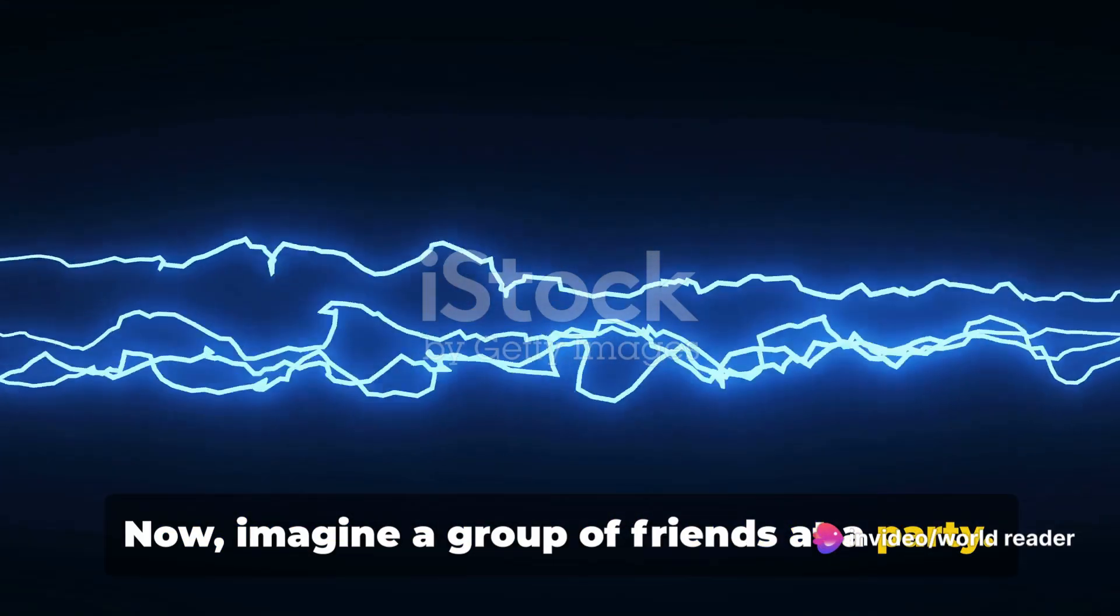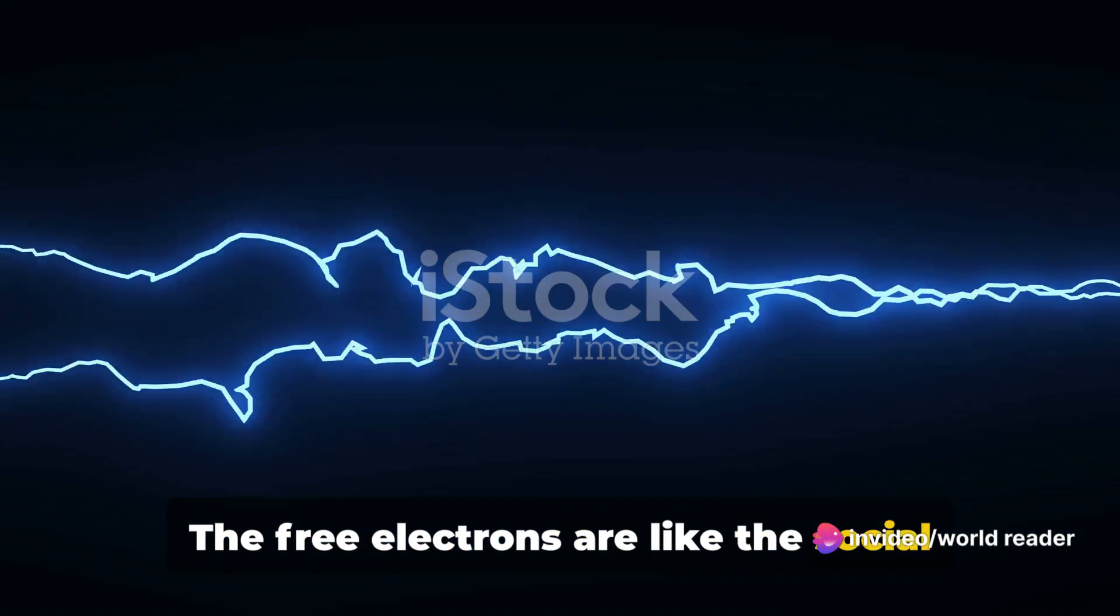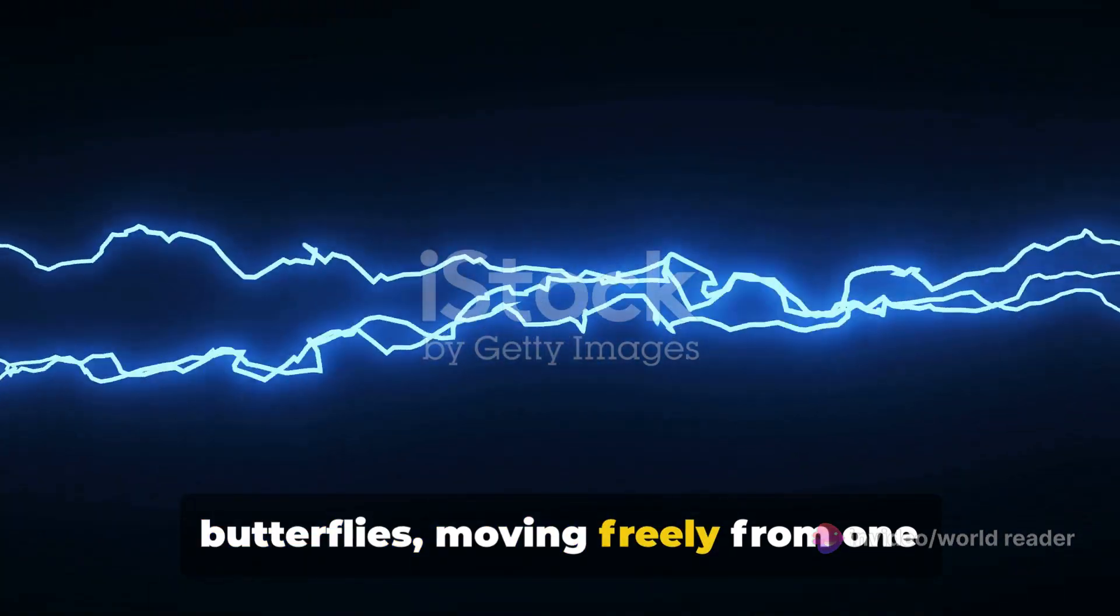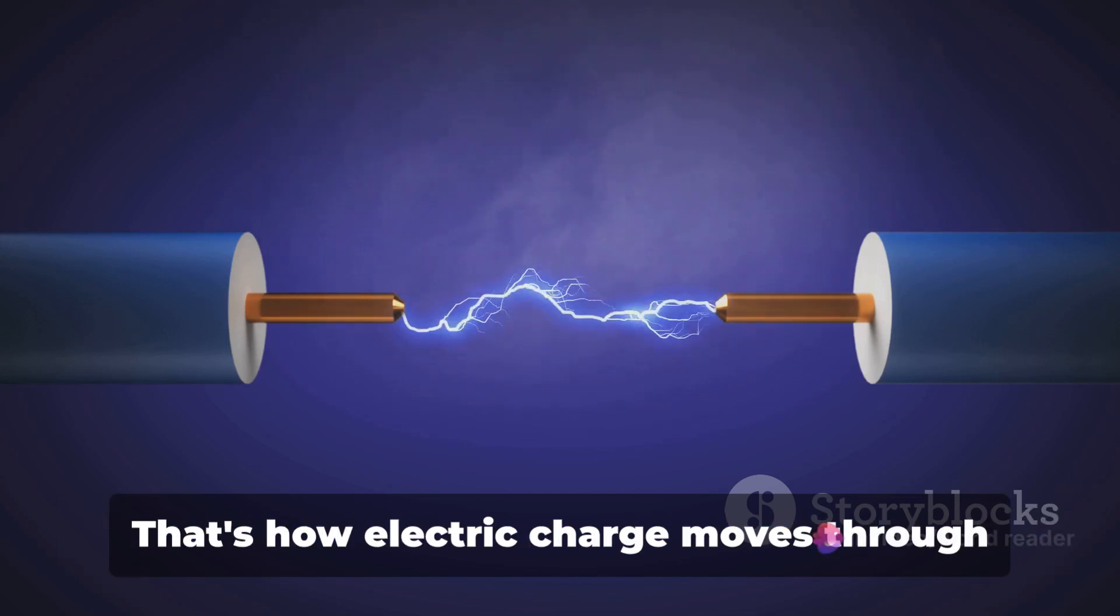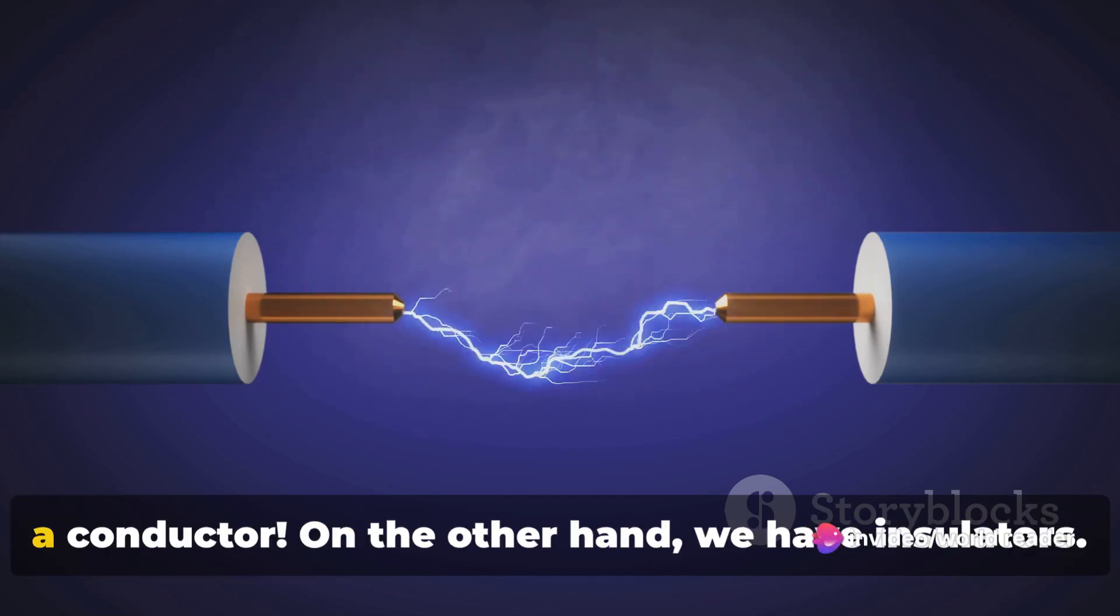Now imagine a group of friends at a party. The free electrons are like the social butterflies, moving freely from one conversation to another. The electric charge is the latest gossip, passed along swiftly by these social butterflies. That's how electric charge moves through a conductor.